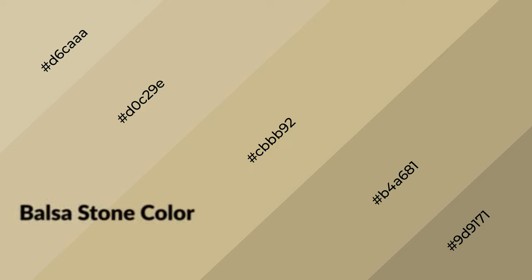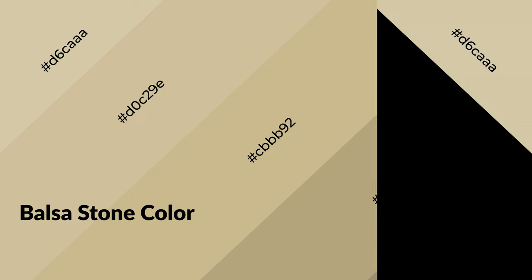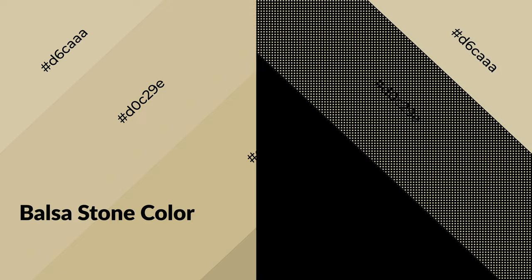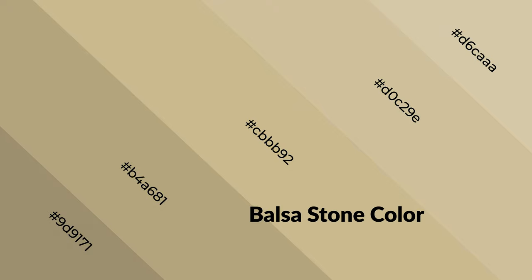Balsa stone is a warm color and it emits cozier and active emotions. Warm colors are symbols of warmth, fire, heat, and sunshine. It also evokes joy, passion, love, and even anger. You can see them used in restaurants and gyms.